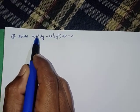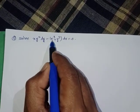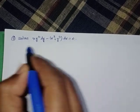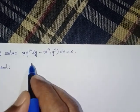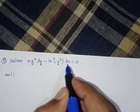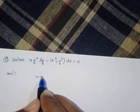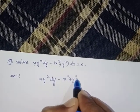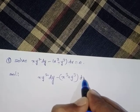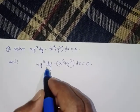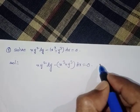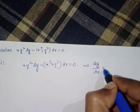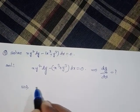Solve: x·y²dy - (x³ + y³)dx = 0. First, write down the given equation: x·y²dy - (x³ + y³)dx = 0. From this, we will derive the dy/dx form.